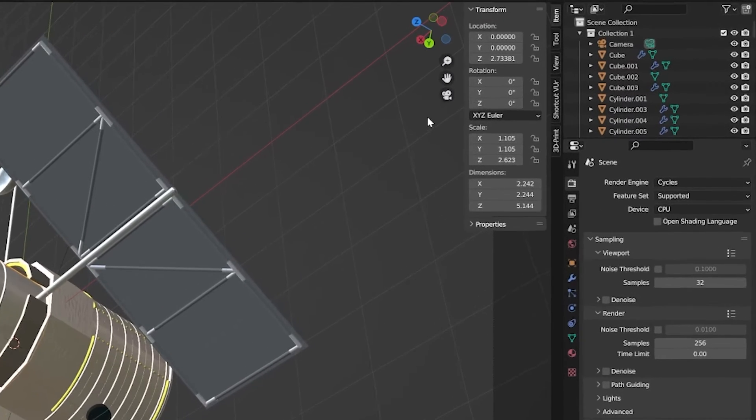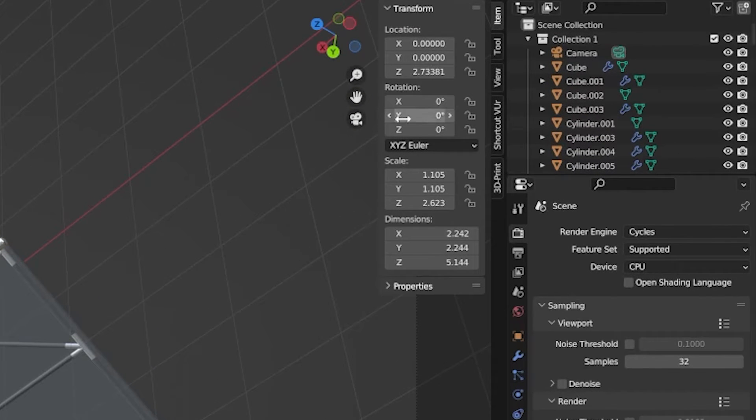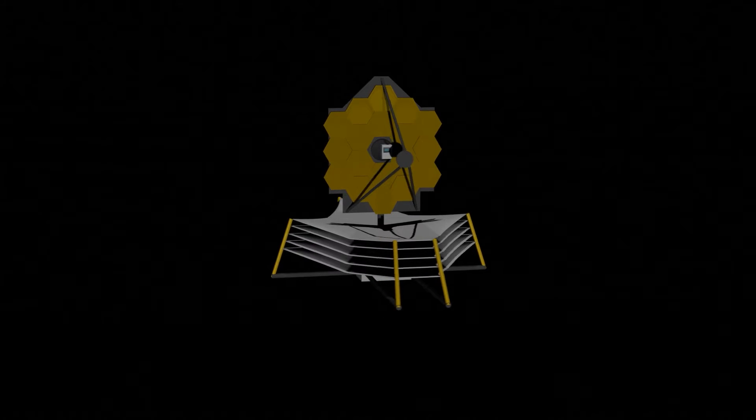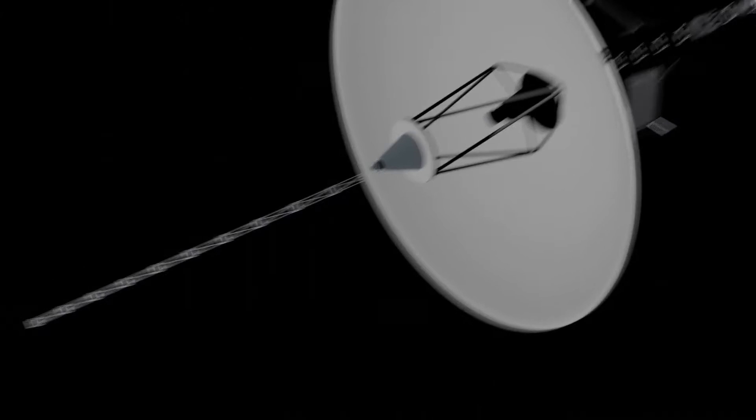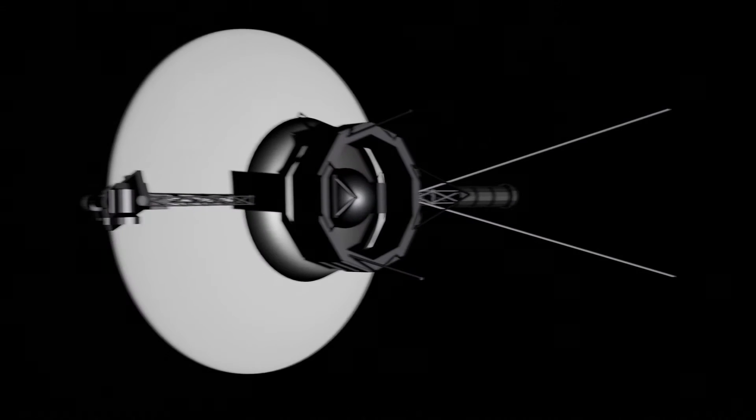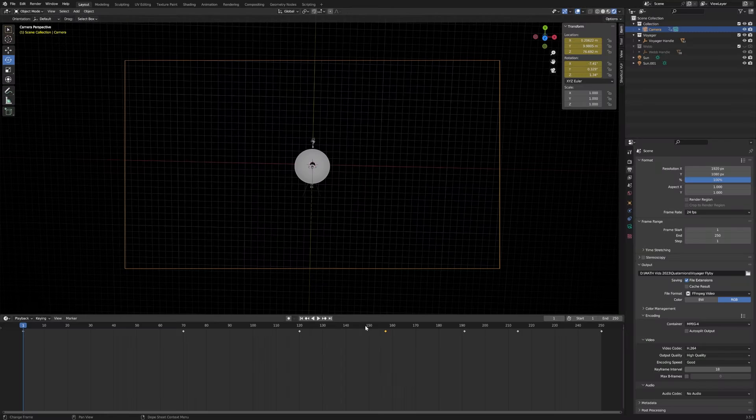The default way that Blender is set up to handle rotations is using Euler angles. These are perfectly fine if you're going to just do something simple, but the more complicated the rotations you're trying to do, the less reliable the interpolation becomes. You see, in animation, we set these things called keyframes. So we pick a frame and we say, on this frame, we want you to be in this configuration.